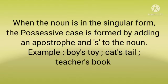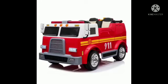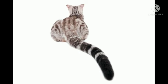When the noun is in the singular form, the possessive case is formed by adding an apostrophe and S to the noun. For example: boy's toy, cat's tail, teacher's book.